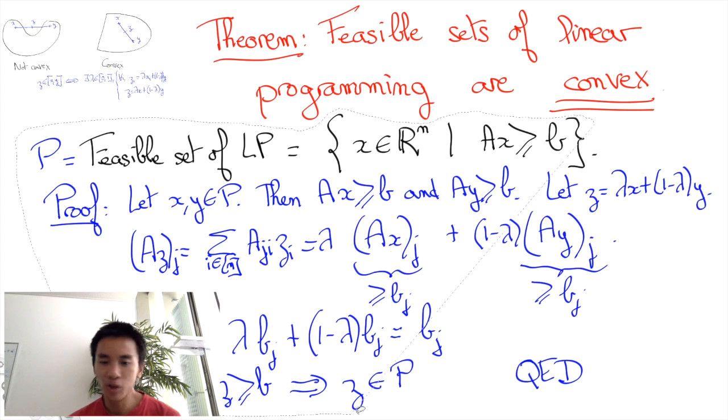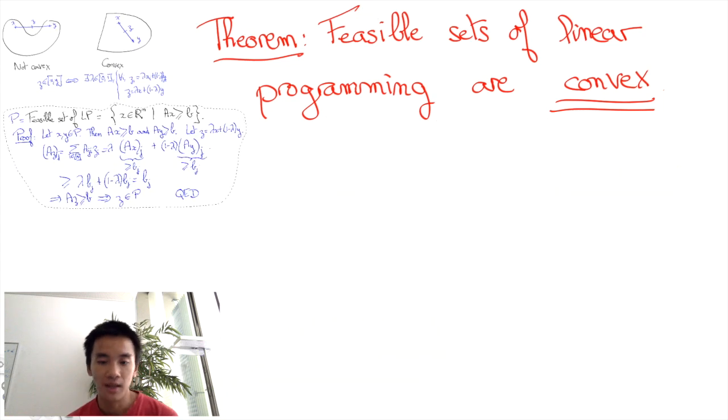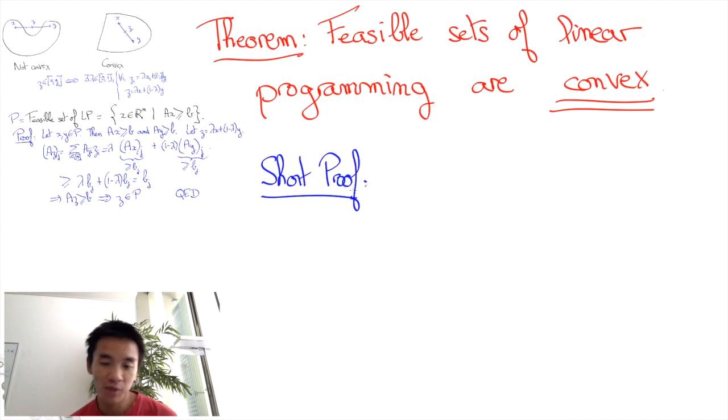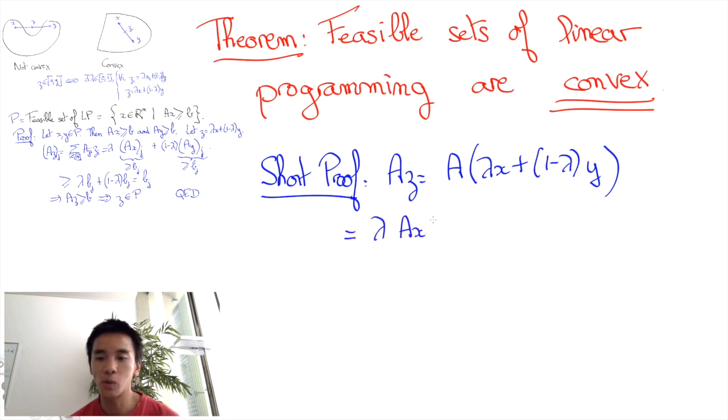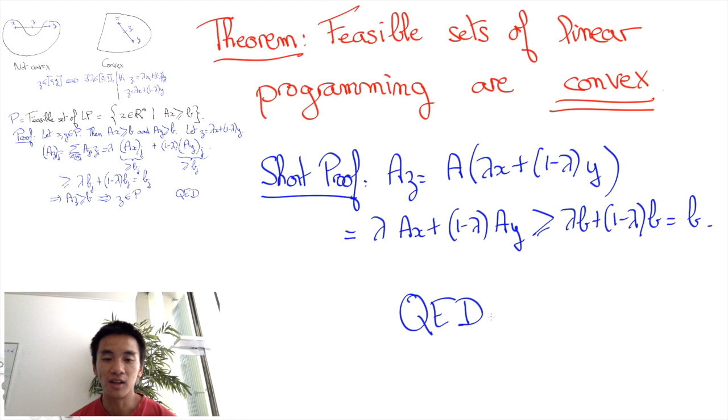Now I have given the details of the computations here, but more generally, multiplication by a matrix is a linear operation, which means that AZ equals A of (lambda X plus (1 minus lambda) Y), which by linearity is going to be lambda AX plus (1 minus lambda) AY. Using this, the proof becomes very straightforward and we see immediately that AZ is at most lambda B plus (1 minus lambda) B, which is equal to B. This is a way to skip a lot of details of computation and it turns out to be extremely useful if you want to manipulate linear operations in practice.